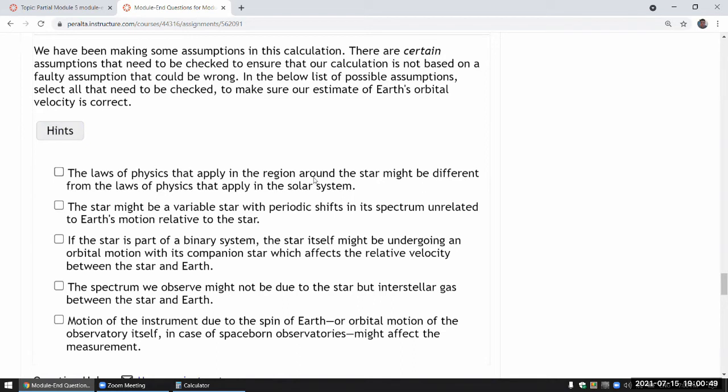So we don't worry about that. The star might be a variable star with a periodic shift in spectrum. Okay, that I guess could happen. I don't know if there's, can't think of any physical mechanism at the moment, but hey, so what this is getting at is there could be a shift in spectrum that's not associated with the Earth's motion.